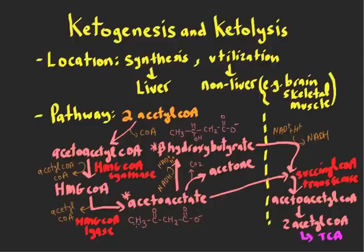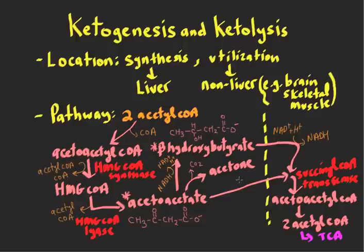Acetoacetate has a ketone group, and the enzyme that forms it is HMG-CoA lyase. Acetoacetate can be converted into two different things. One is acetone, through a decarboxylation. Acetone is clinically relevant as a way of identifying ketoacidosis on physical exam, because you can smell acetone on the breath of individuals with high ketogenesis. It is exhaled in the breath and gives the breath a fruity characteristic.